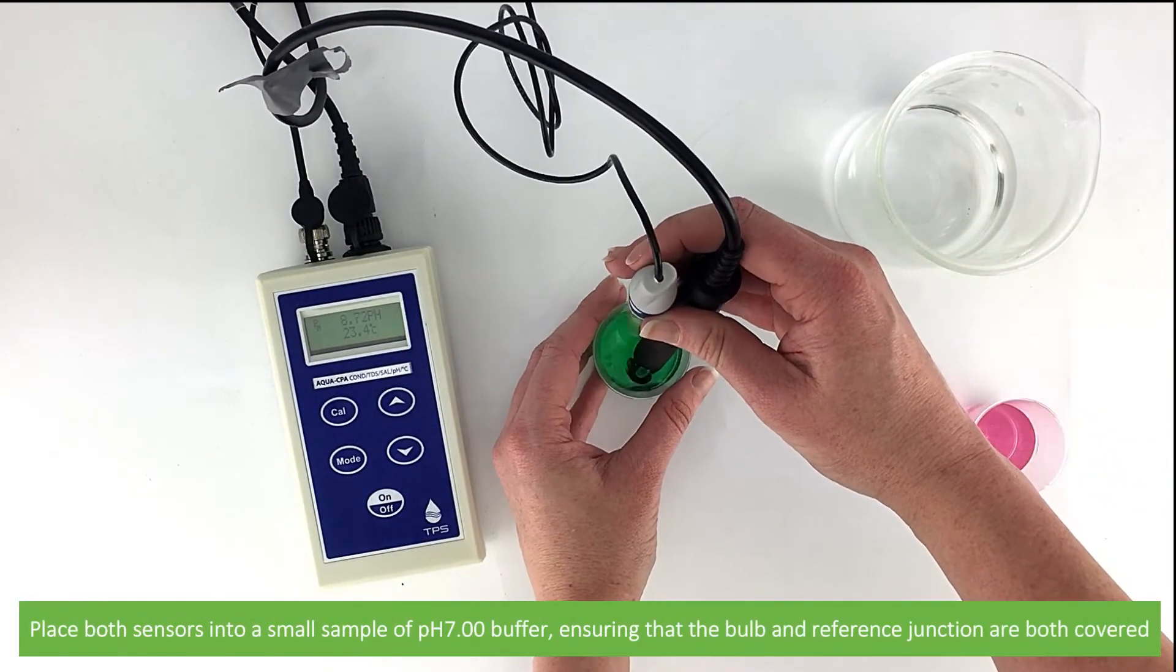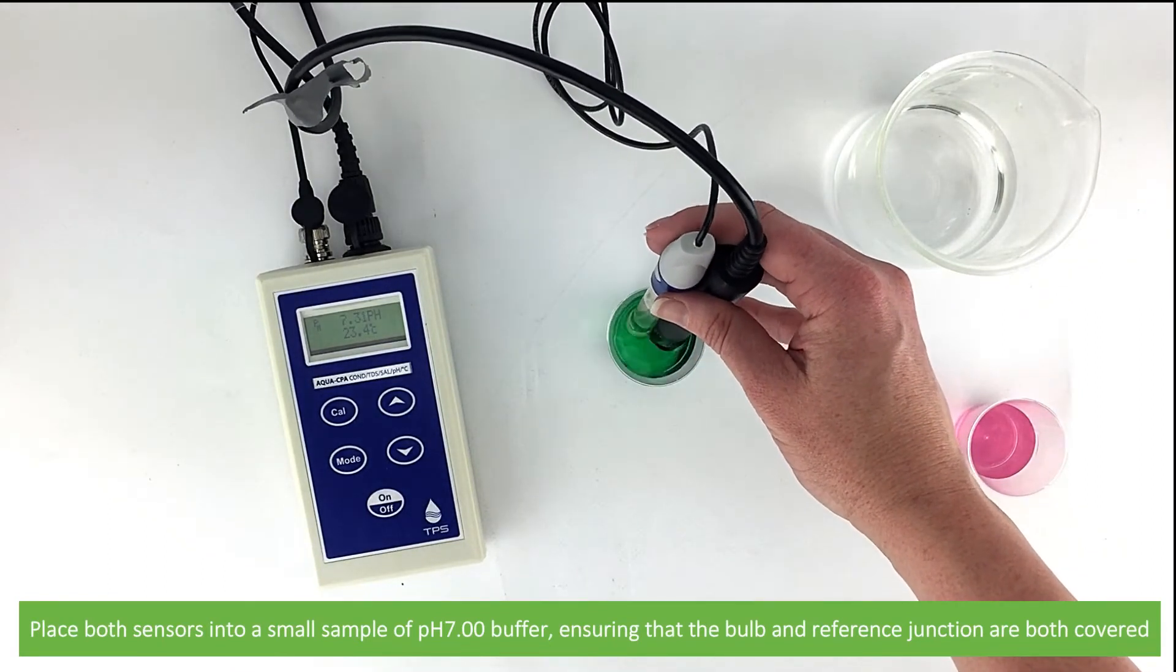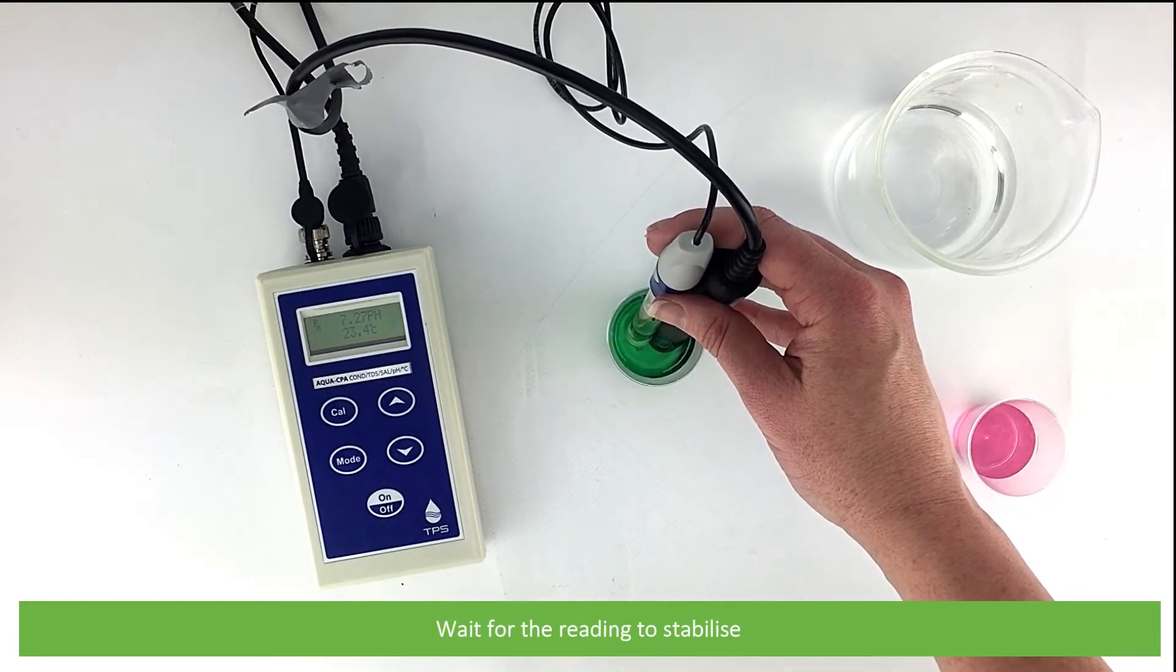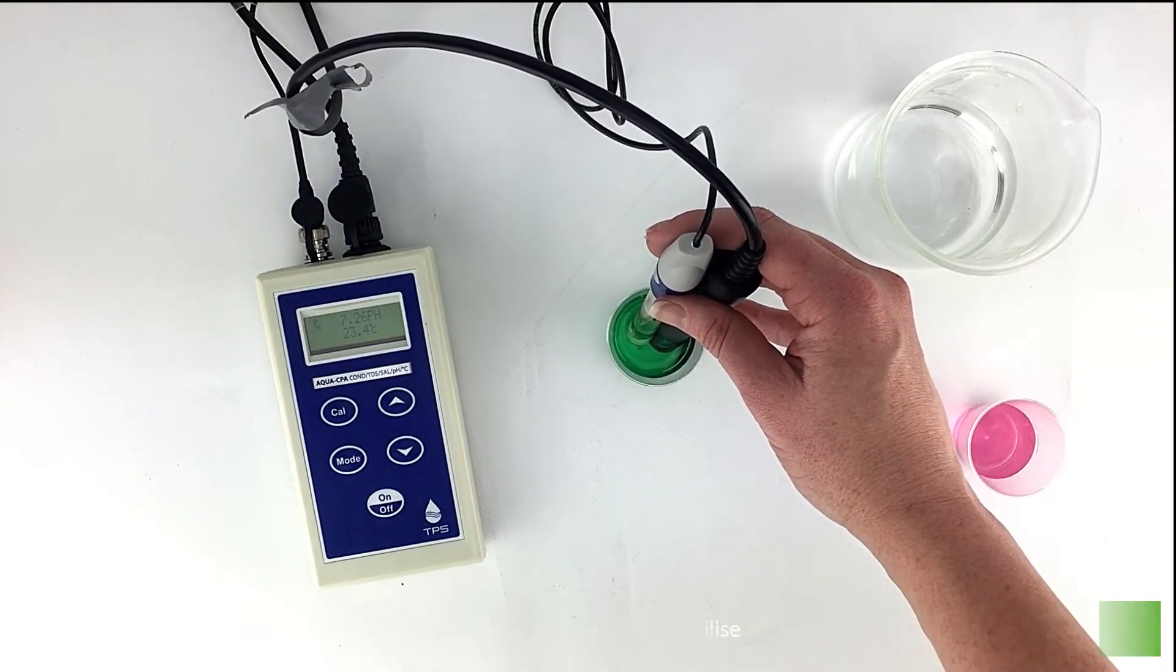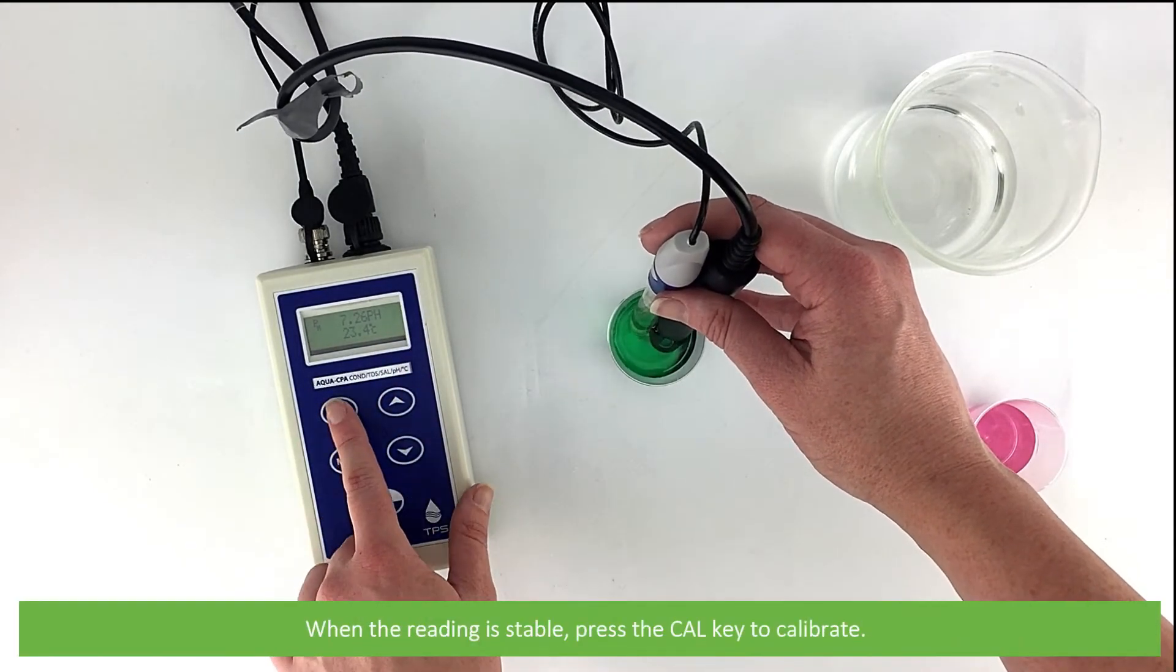Then place both the sensors into a small sample of pH 7 buffer, ensuring that the bulb and reference junction are both covered. Wait for the reading to stabilize. When the reading is stable, press the CAL key to calibrate.